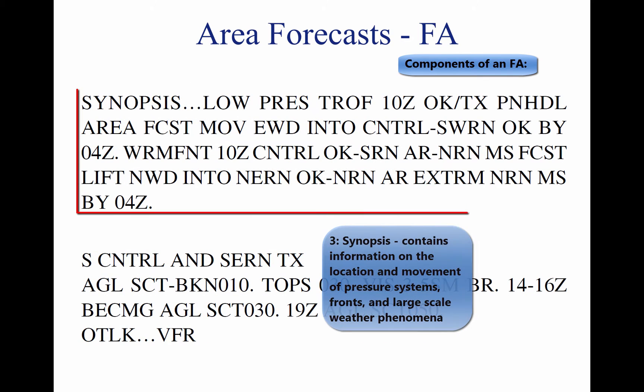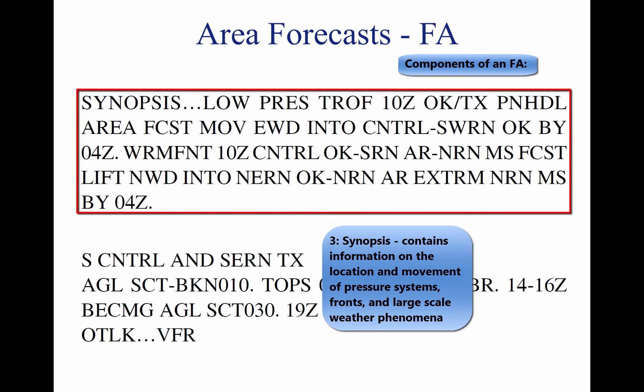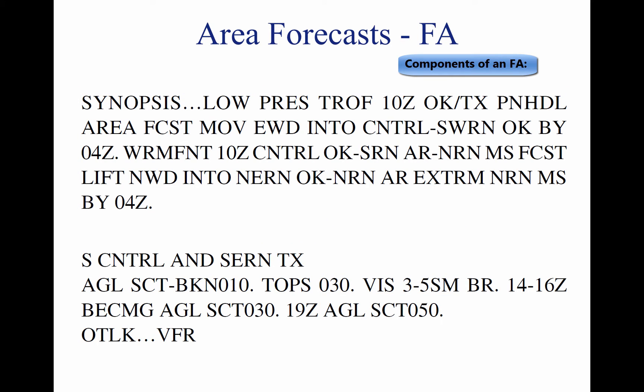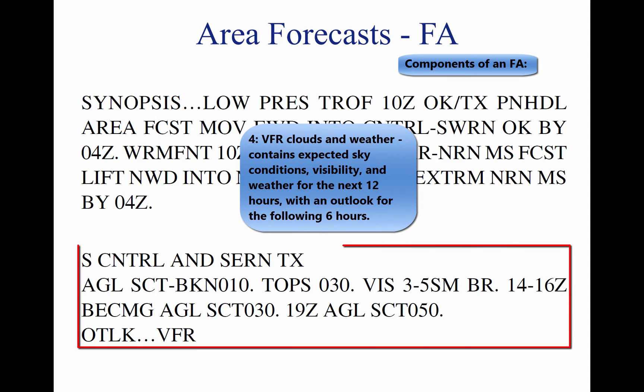3. Synopsis: gives a brief summary identifying the location and movement of pressure systems, fronts, and circulation patterns. 4. VFR clouds and weather: this section lists expected sky conditions, visibility, and weather for the next 12 hours, and an outlook for the following six hours.